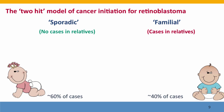The two-hit model of cancer initiation explains the occurrence of two kinds of family histories — two kinds of retinoblastoma. There are cases described as sporadic and cases described as familial. In sporadic cases, there are no relatives known to have retinoblastoma. In familial cases, there are relatives known to have it. These two kinds are approximately equal in frequency, but quite different in causation.